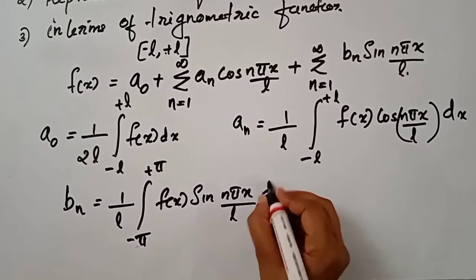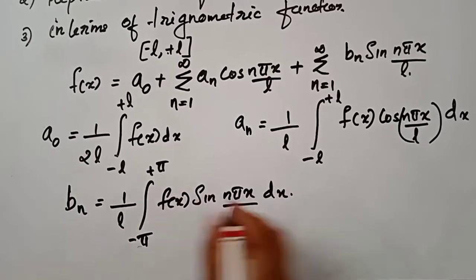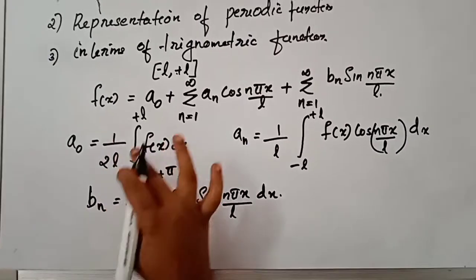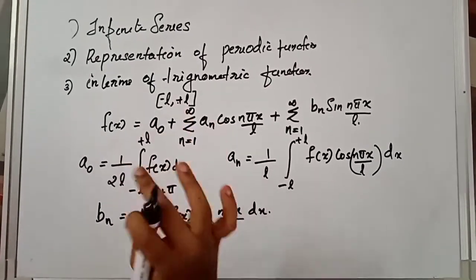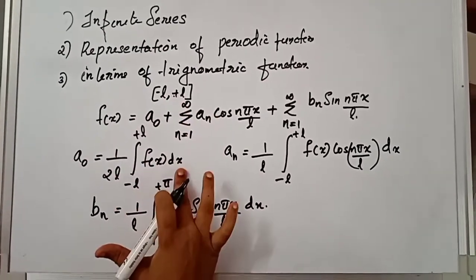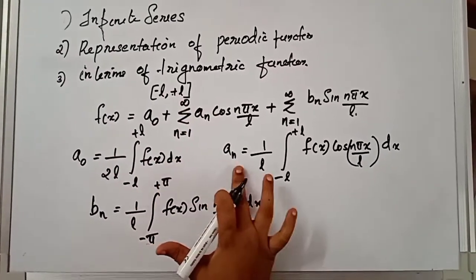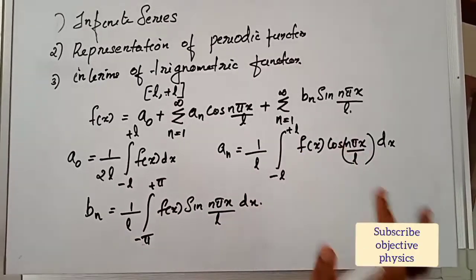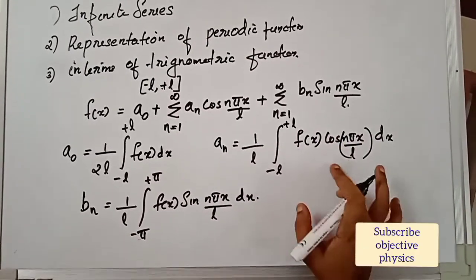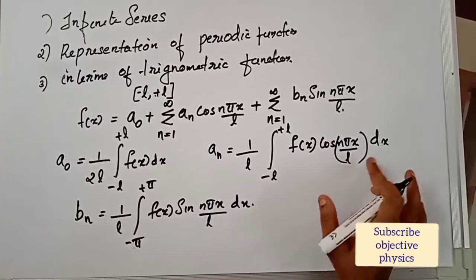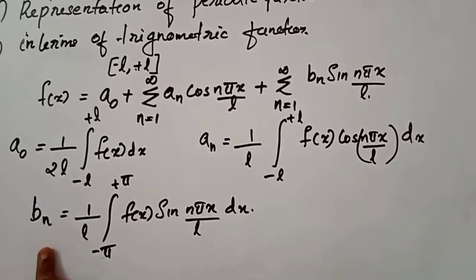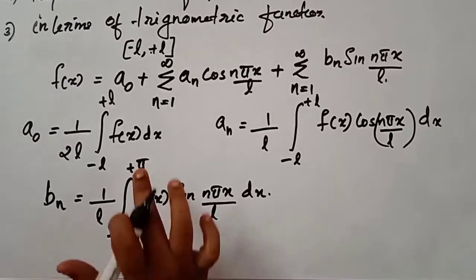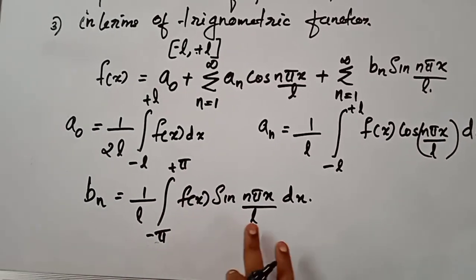Where a0 is equal to 1 by 2l integral from minus l to plus l of f(x) dx. An is equal to 1 by l integral from minus l to plus l of f(x) cos(n pi x / l) dx. Bn is equal to 1 by l integral from minus pi to plus pi of f(x) sin(n pi x / l) dx.